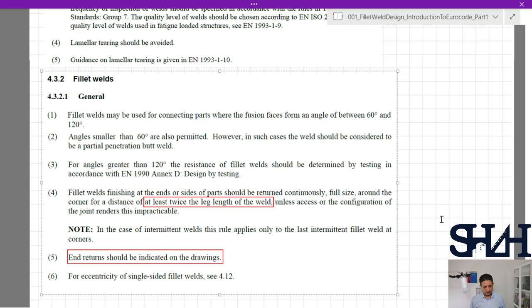Angles smaller than 60 degrees should be considered as partial penetration welds. For angles greater than 120 degrees, the resistance of fillet welds should be determined by testing in accordance with EN 1990 Annex D: Design by Testing.